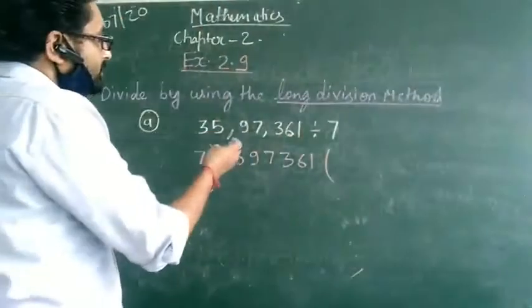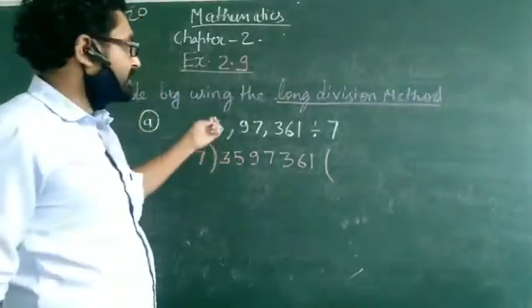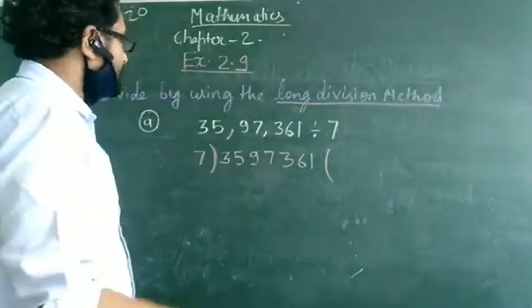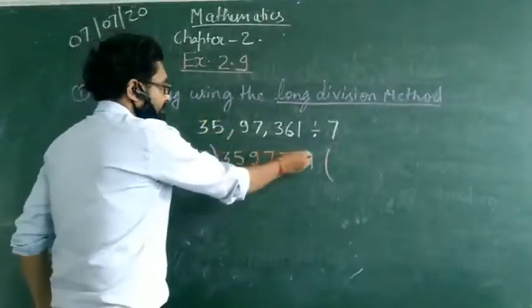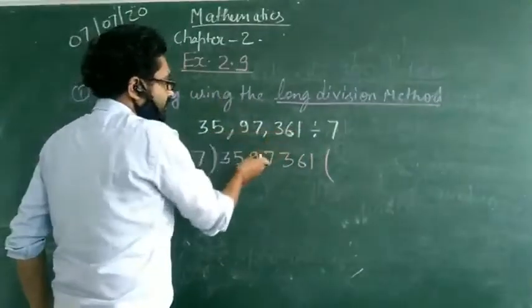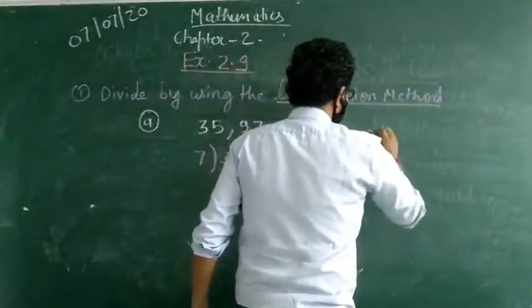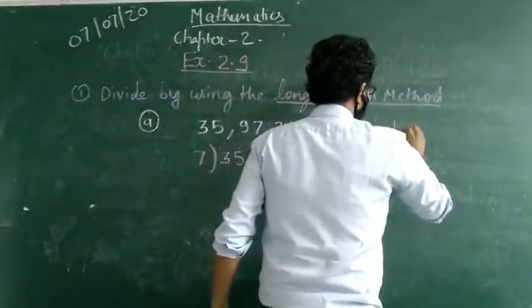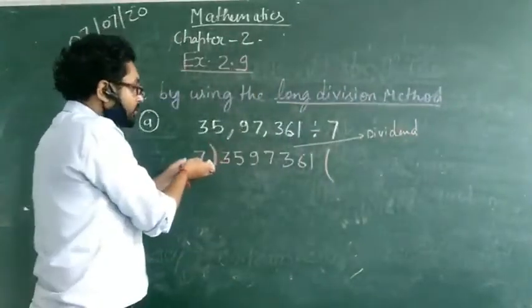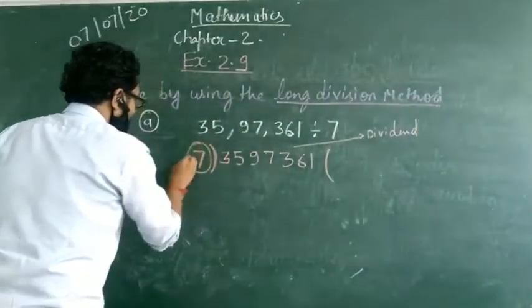First of all, I will remind you that in our previous video, I have already explained that the value which we write here — the dividend value — is called the dividend. And the number by which we divide, in this case 5, is called the divisor.